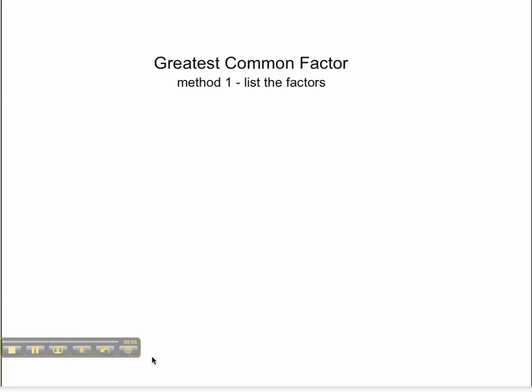Well today we're going to be working with greatest common factor. There are three different methods you can choose to use for the greatest common factor. The first method we're going to show you is listing the factors. Let's say we want to find the greatest common factor of 28 and 36.